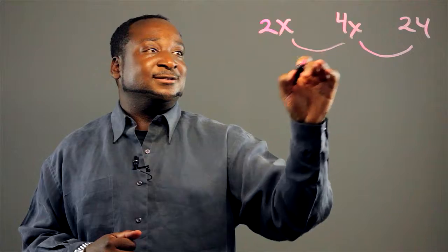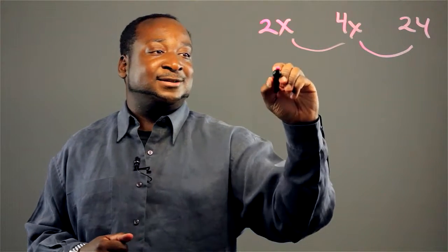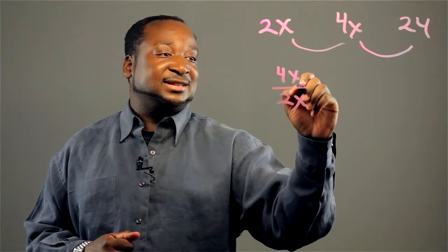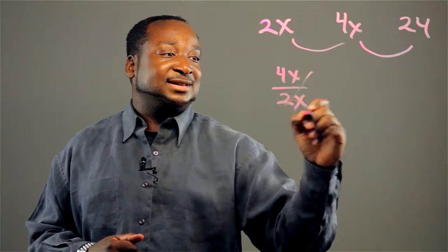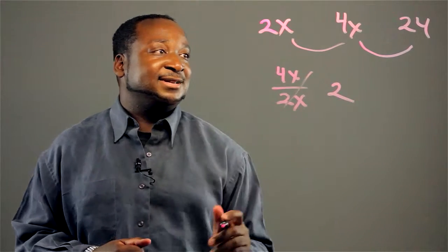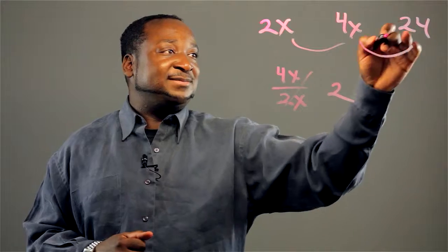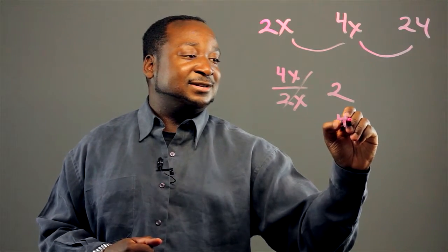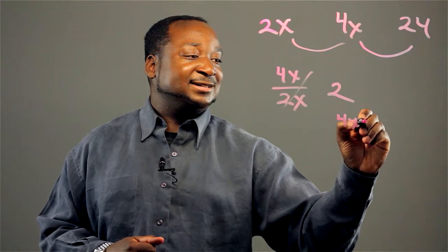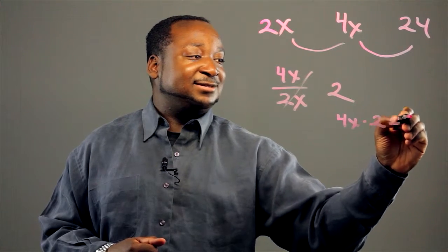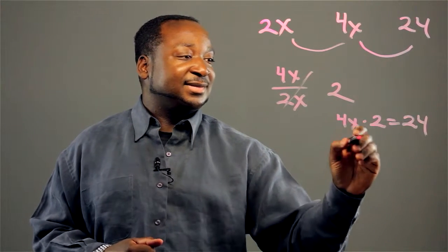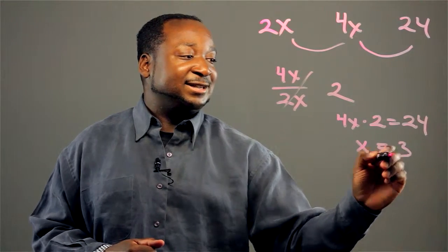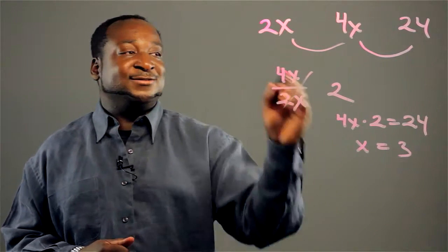So we divide 4x by 2x — this cancels — and this gives us 2. So we multiply by 2 to get the next number. So 4x times 2 equals 24, which gives us x equals 3.